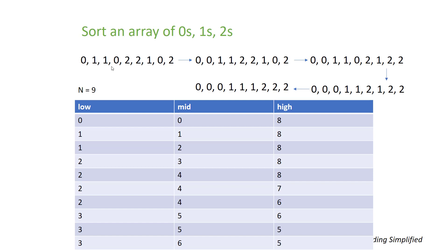The complexity of this approach is O(n), but we are iterating the array two times — first to get the counts, and then again to put the values back. We also use three extra variables. Can we reduce this to a single iteration? Yes, there is a better way.